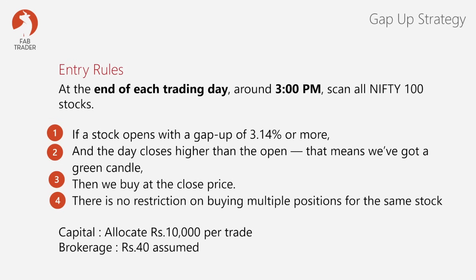To recap the entry rules: we look at the Nifty 100 universe. At 3 PM before the market closes, we scan the 100 stocks and find the ones that opened that day with a gap of at least 3.14%. Out of those, we check that the current price is still higher than the open price — a green candle for that day. If both conditions are met, we buy that stock at end of day.